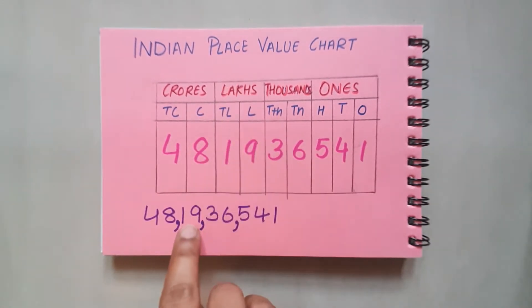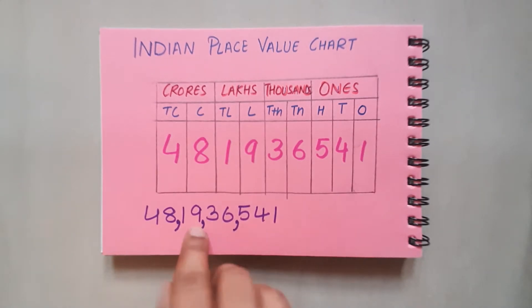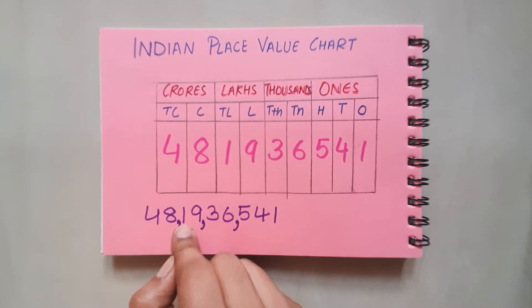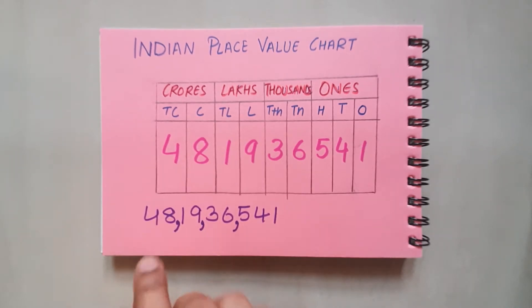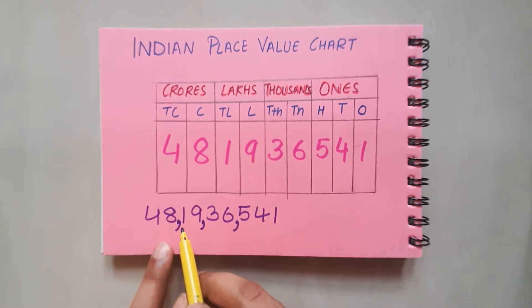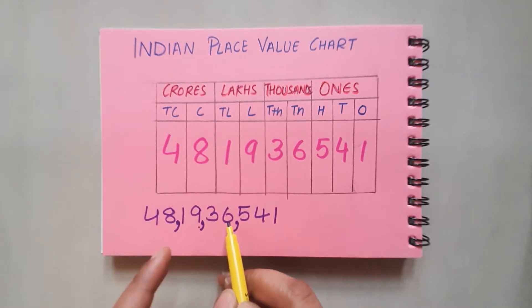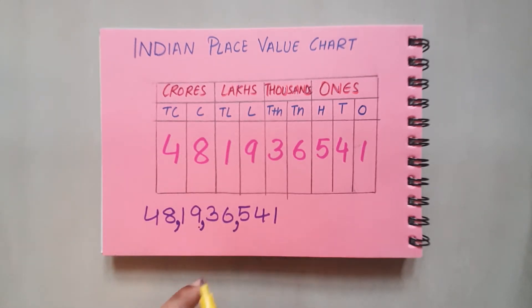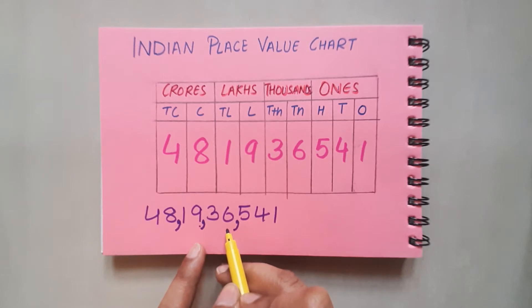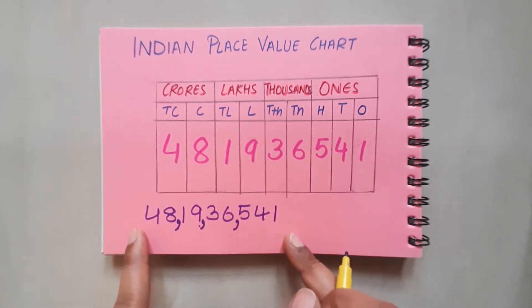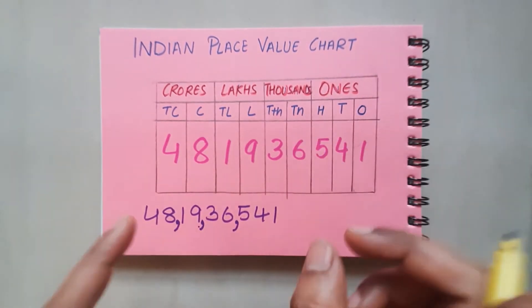When we say this is in the lakhs period, we are speaking this number together. It's not '1 lakh, 9 lakhs' — when it's in the lakhs period, we speak the number together: 19 lakh. Similarly, this is not 'three ten thousands, six thousands' — we say 36,000. This is how periods help us to read large numbers.